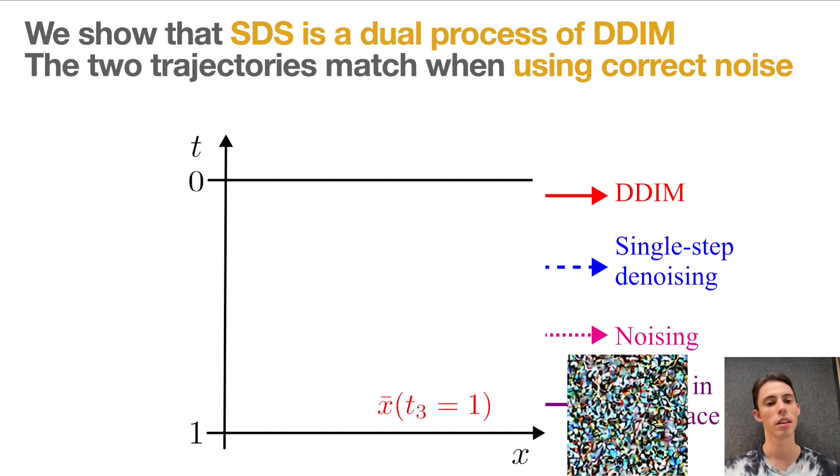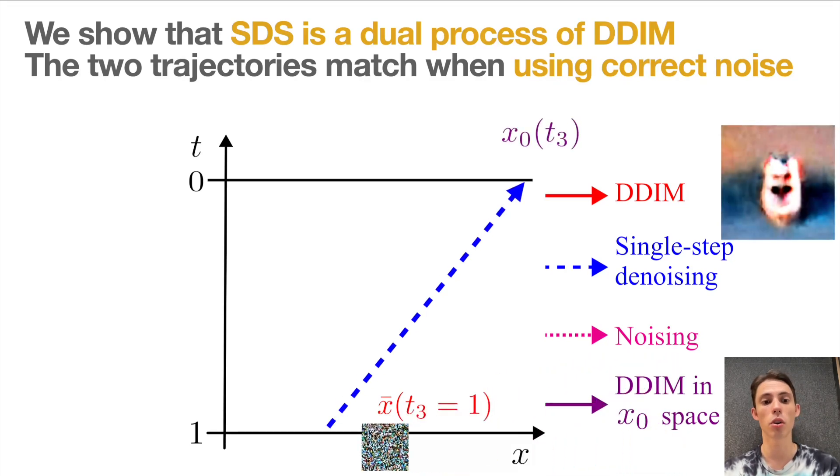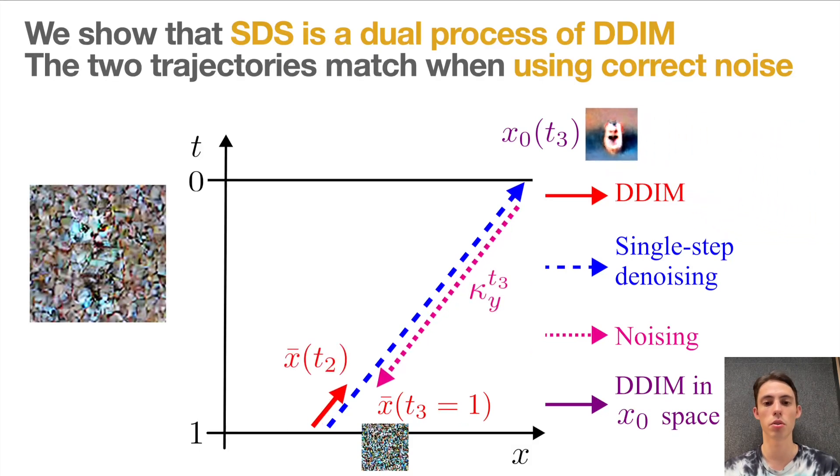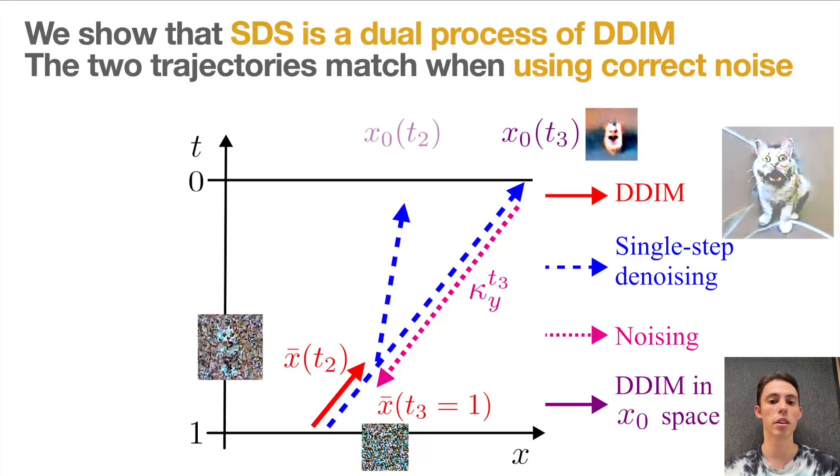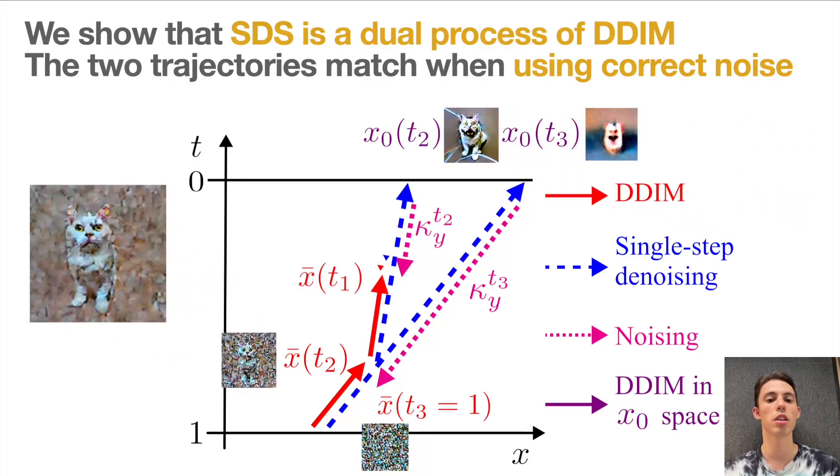DDIM starts by sampling Gaussian noise, which corresponds to timestep 1 at the bottom. Using a trained diffusion model, we predict the added noise term. By removing it all the way, we should obtain a blurry image. So instead, we only partially remove the predicted noise. From there, we continue the process until we converge to a nice-looking and sharp image.